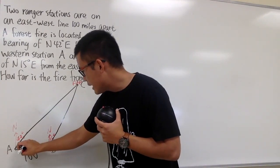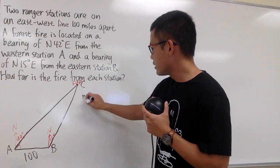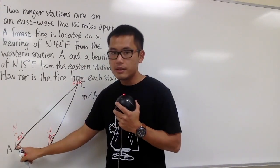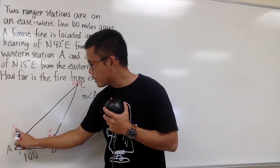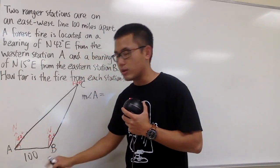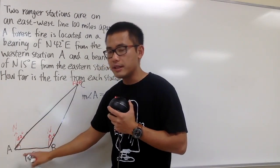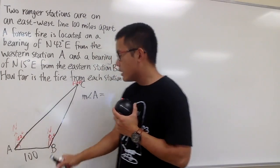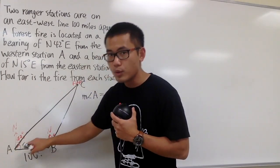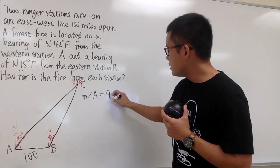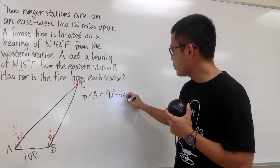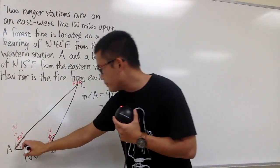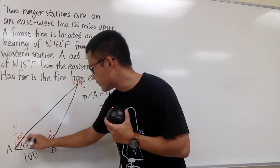Let's find angle A in the triangle. Looking up to north is vertical, and the AB line is horizontal, making 90 degrees together. We turned 42 degrees from north, so angle A equals 90 minus 42, which is 48 degrees.